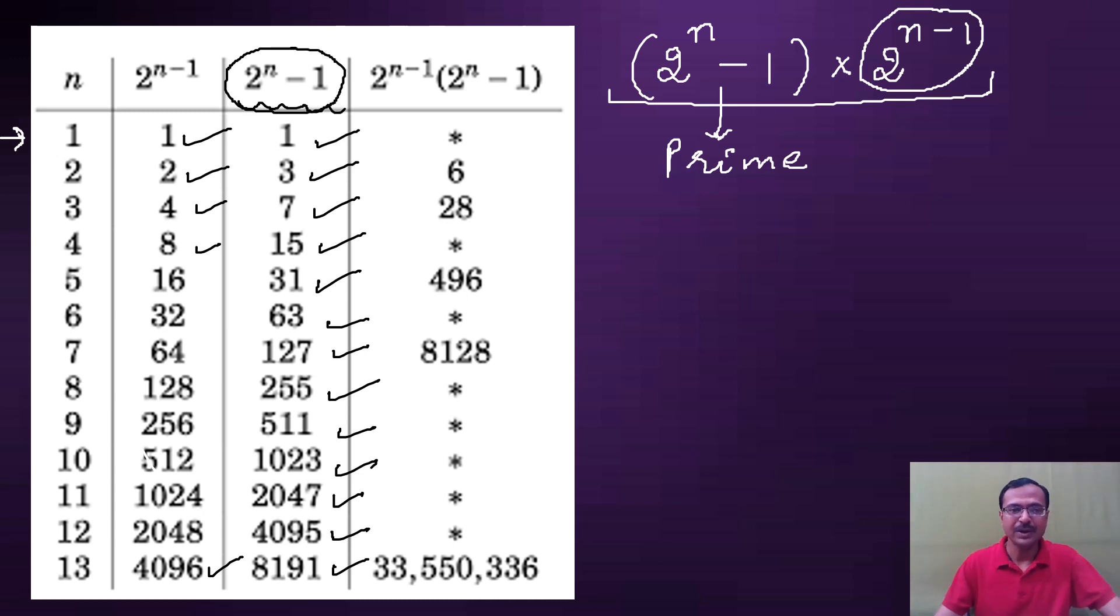Euclid said that this factor 2 raised to power n minus 1 has to be a prime number. Let's check: Is 1 prime? No. Is 3 prime? Yes. Is 7 prime? Yes. Is 15 prime? No. 31? Yes. 63? No. 127? Yes. After that these are all no's, they are not primes. Then n equal to 13 gives us 8191, which is prime. So up to a huge number there are only 5 perfect numbers.